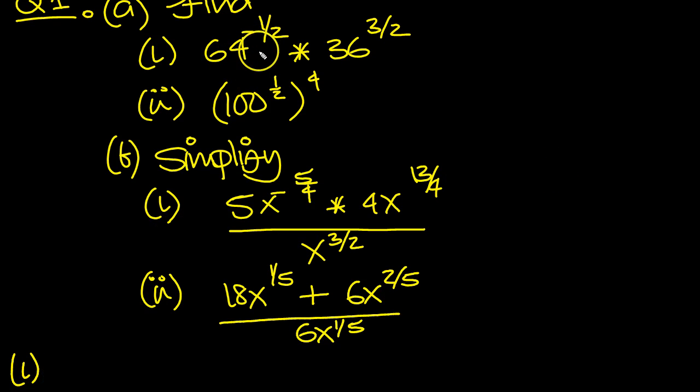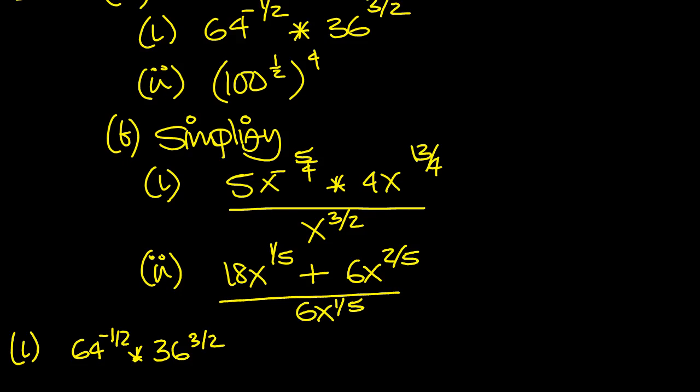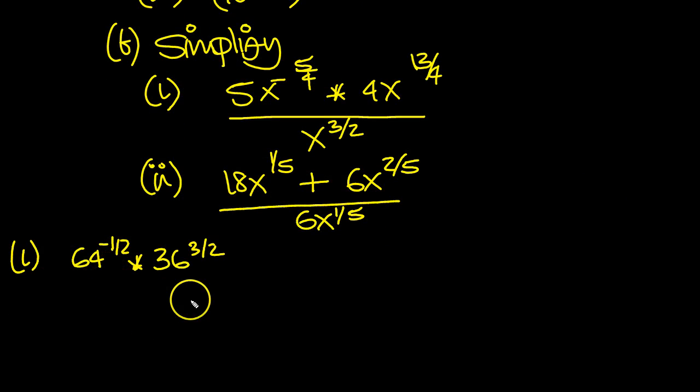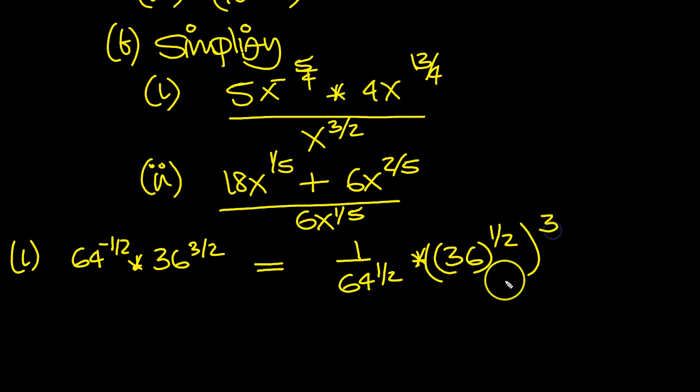So we've got 64 to the minus half times 36 to the 3 over 2. So 64 to the minus half, well that would be 1 over 64 to the half if you flip it upside down. This would be 36 to the 3 over 2, which you can split it up into a power power. 36 to the half and then cubed. Power power you times so you're back to the 3 over 2.